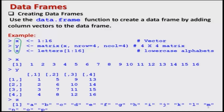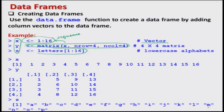I will generate three different types of variables: one numeric variable, one matrix, and one character using alphabets. Then I will combine them together in the format of a data frame. The three variables are x, y, and z. The first variable x is a sequence of numbers from 1 to 16 — a vector. Variable y is a 4 by 4 matrix constructed from the 16 elements in x. Variable z contains a sequence of the first 16 alphabets in lowercase using the command letters[1:16].